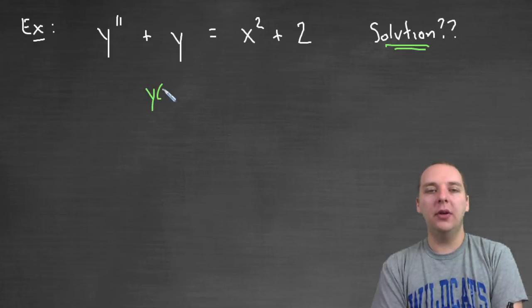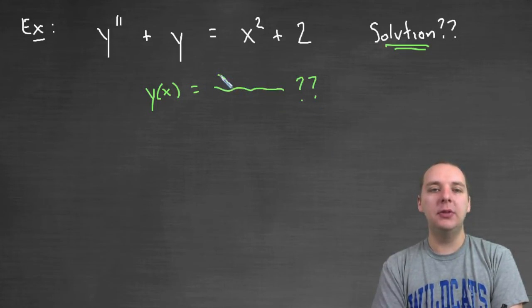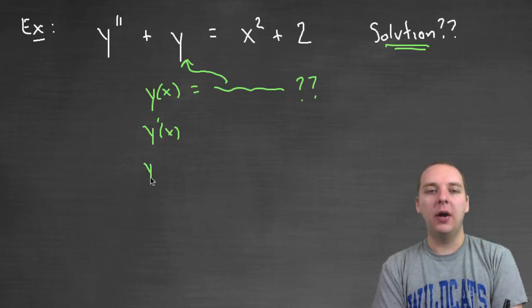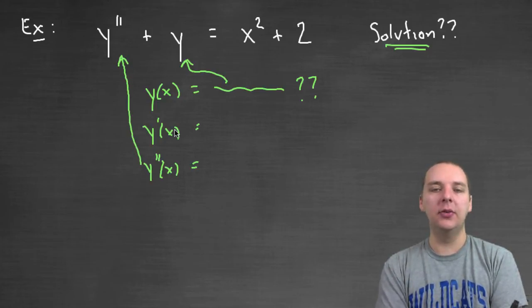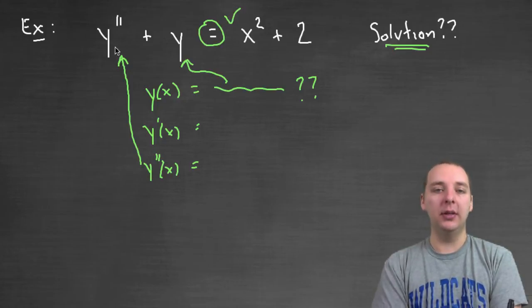Now what is it that we're even looking for? We're looking for a function of x such that if you take this guy, which I don't know who he is right at this moment, but if you substitute this in for y and, well sorry not this, but you find y' and y'', and you take y'' and substitute it in appropriately for the second derivative, it would make this equation really be true. These two combined would be x² + 2.